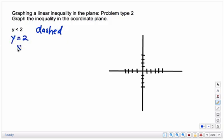Remember, y is always 2. X can be anything. Y has to be 2. So x could be negative 2, 0, and 3.